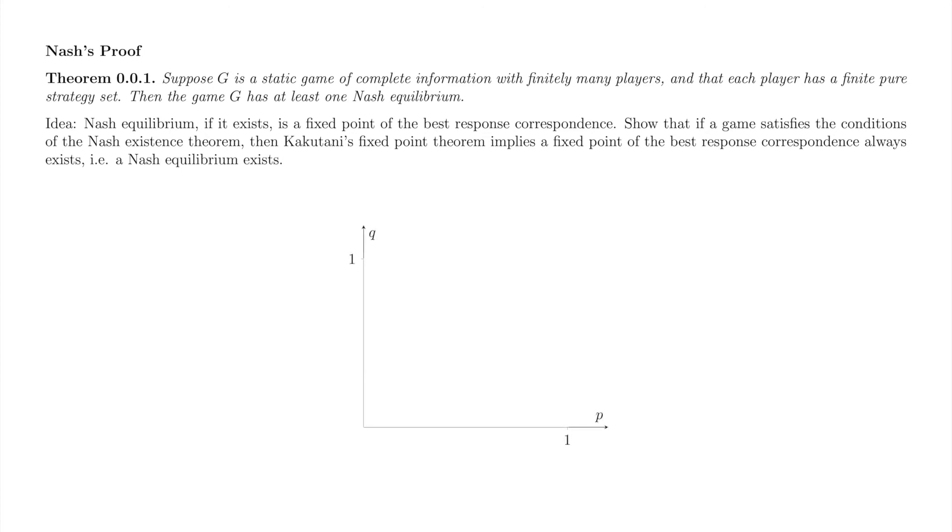We'll try to give some intuition for why a two-player static game of complete information, in which each player has two pure strategies, must have a Nash equilibrium. Here is a graph of the one-by-one square. As we saw in matching pennies, we can graph the mixed strategy best response functions inside this square.